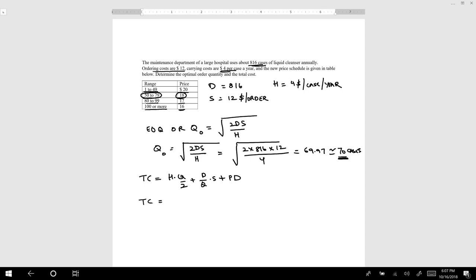I will substitute those values. So, H is $4, Q is 70, divided by 2, plus demand D is 816, divided by Q, which is 70, times S, which is $12, plus the price per unit, which we are getting at $18 because we are ordering 70 units, multiplied by the demand, which is 816. If you calculate this, you will get $14,968. So this is the total cost when we order 70 units.